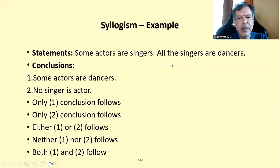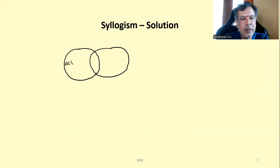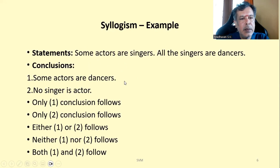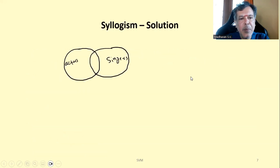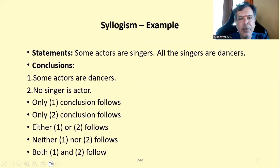Next example: Some actors are singers. All singers are dancers. Let us draw a Venn diagram. For 'some actors are singers,' we draw two overlapping circles — one for actors and one for singers. Then since all singers are dancers, we draw a larger circle covering the singers circle for dancers. This is the basic diagram for these two statements.